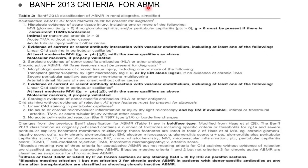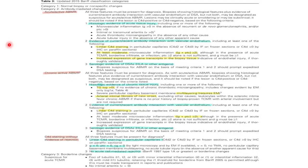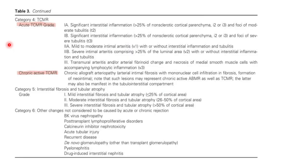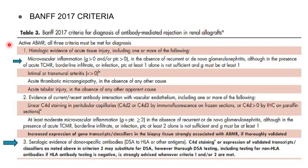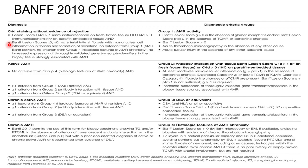With respect to the 2013 criteria, I am not going into detail. The changes are with respect to individual components, but grossly the three categories — morphological evidence, serological evidence, and interaction evidence — must all be present. Subsequently subcategifications were added. The 2015 and 2017 criteria were further updated.